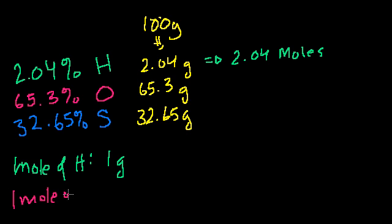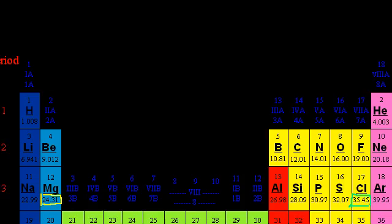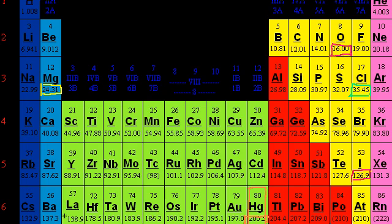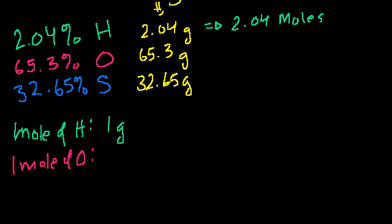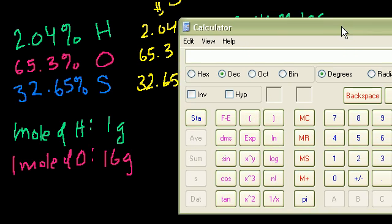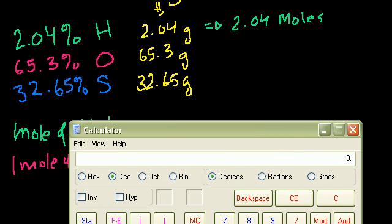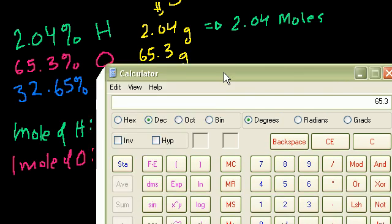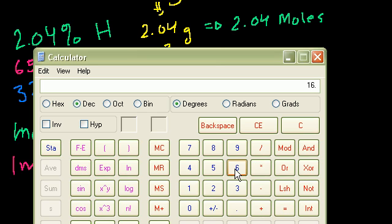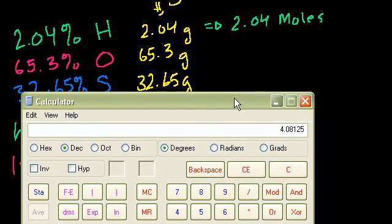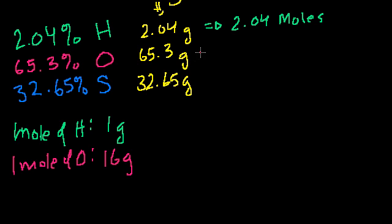And then oxygen. 1 mole of oxygen. Oxygen's mass number, in case you forgot, is 16. Oxygen's mass number is 16. So 1 mole of oxygen has a mass of 16 grams. 6.02 times 10 to the 23 oxygen atoms has a mass of 16 grams. So how many moles do we have here? We have 65.3 grams of oxygen, and we have 16 grams per mole. So you divide by 16. It equals 4.08125. So I have 4.08 moles of oxygen.